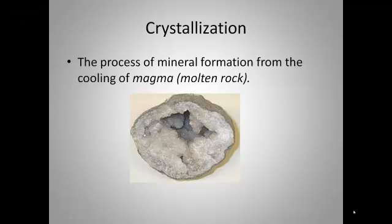One way minerals are formed is through the process of cooling of magma or molten rock. These types of minerals definitely form crystals — you can see from this geode here all the crystals inside of it. Lava, which is magma that has reached the surface, will also form minerals, but those crystals will be very, very tiny.